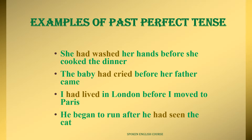Some examples of past perfect tense: 'She had washed her hands before she cooked the dinner.' The first completed past action is 'had washed,' and the second past action is 'cooked.' The hand washing happened before the cooking — that's what past perfect tense indicates. 'The baby had cried before her father came.' 'I had lived in London before I moved to Paris.' In each case, the earlier action uses past perfect, and the later action uses simple past.